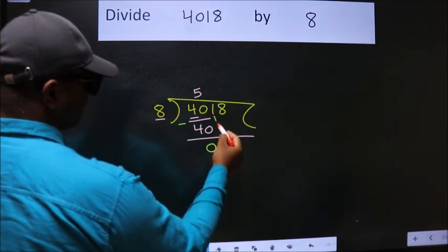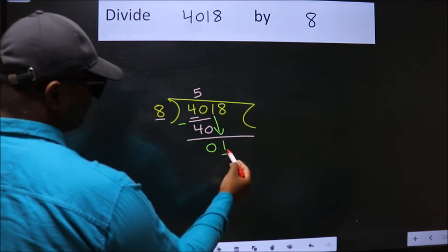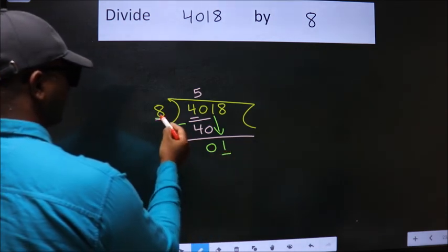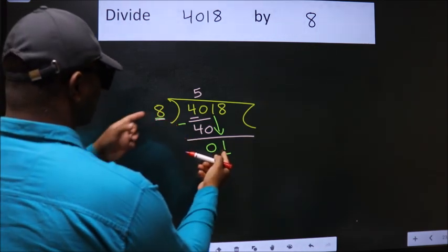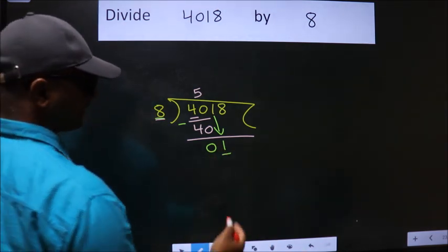After this, bring down the beside number. So 1 down. Here we have 1. Here 8. 1 is smaller than 8, so we should bring down the second number.